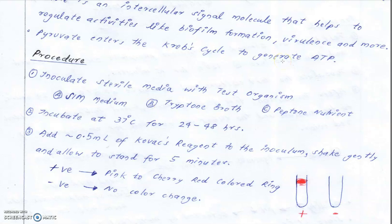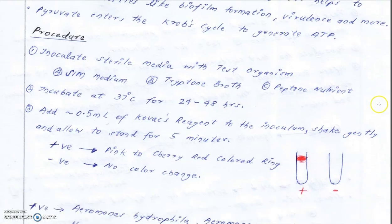Incubate at 37°C, which is approximately the optimum temperature, for 24 to 48 hours. Then add 0.5 ml of Kovac's reagent to the inoculum, mix it gently, and allow it to stand for around 5 minutes.